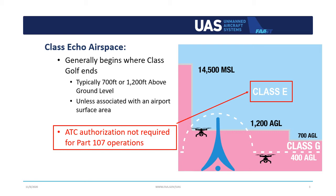Class E airspace generally begins where Class Golf ends and usually varies between 700 feet and 1200 feet above ground level, or AGL. Since the Class E airspace is not associated with an airport surface area, Part 107 operators do not require an air traffic control authorization prior to flying in this type of Class E. This image represents a profile or side view of the Class E airspace. Now let's see how that looks on an aeronautical chart.